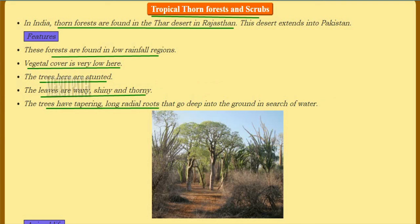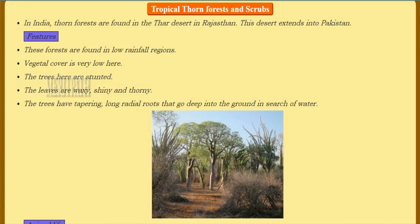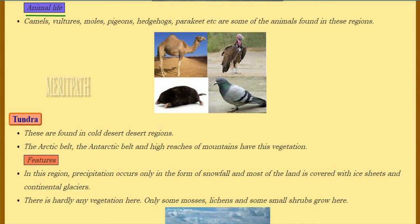Tropical thorn forests and shrubs are found in India typically in the Thar Desert of Rajasthan and extend into Pakistan. They grow in regions that receive very little rainfall. Vegetation cover is very low; trees are stunted with waxy, shiny, and thorny leaves. Trees have deep taproot systems to reach water underground. Animals found here include camels, vultures, moles, pigeons, hedgehogs, and parakeets.